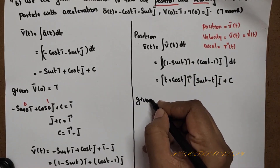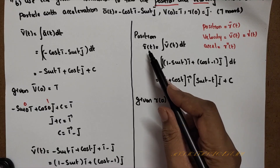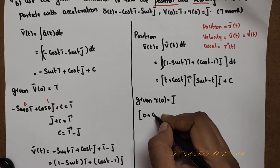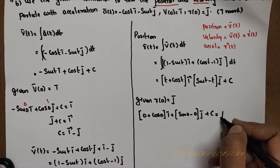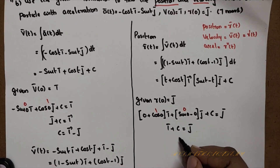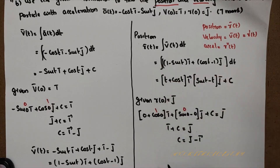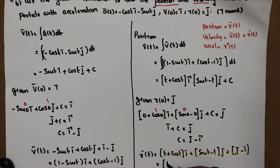Using the initial condition r(0) = j: substituting t=0, r(0) = (0 + cos 0) i + (sin 0 − 0) j + C = i + 0·j + C = i + C = j. Therefore C = j − i. So the position vector is: r(t) = (t + cos t − 1) i + (sin t − t + 1) j.